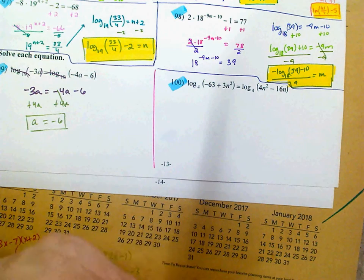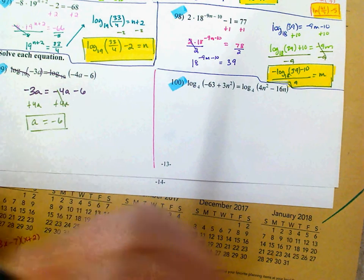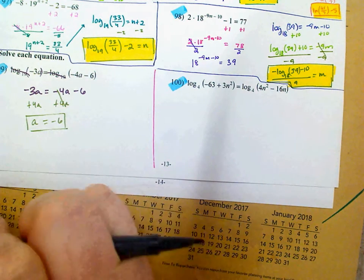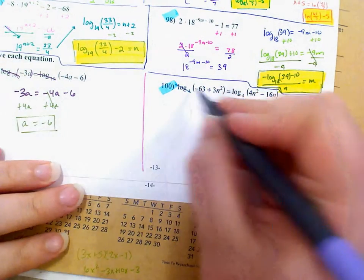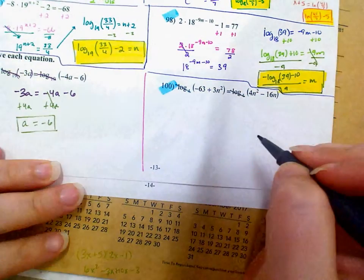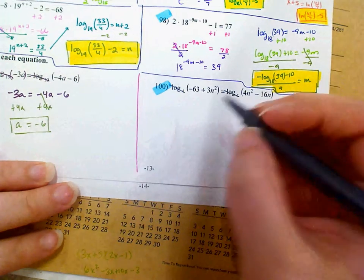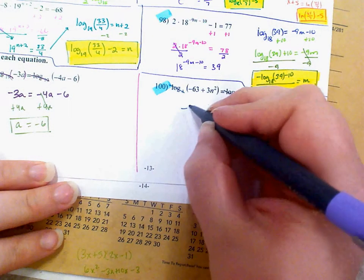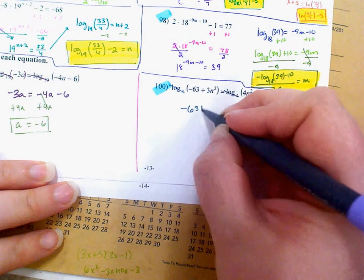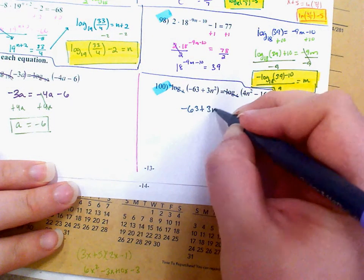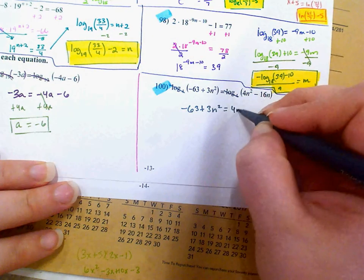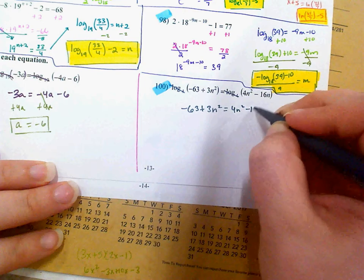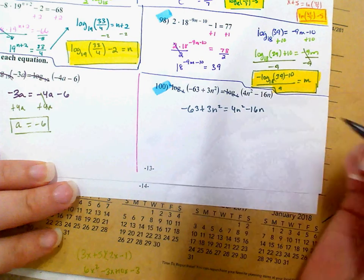On 100, I've got again a log equal to another log, so I'm going to cancel out the logarithms, and I'm really just dealing with negative 63 plus 3n squared equals 4n squared minus 16n.